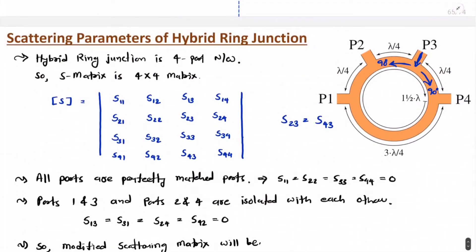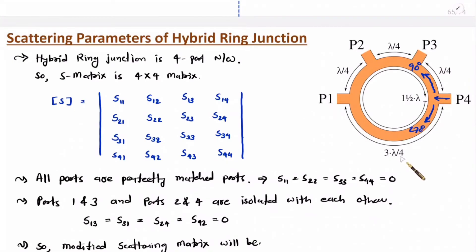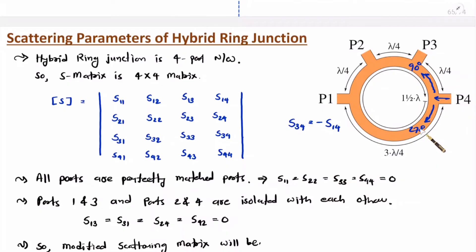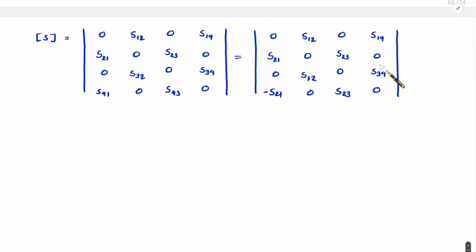Applying input at port 4, the signal is equally bisected towards port 3 and port 1. Port 3 side has 90-degree phase (lambda by 4) and port 1 side has 270-degree phase (3 lambda by 4 spacing), so they are 180 degrees out of phase. Therefore S14 equals negative S34, and we replace S14 by minus S34 in the matrix.